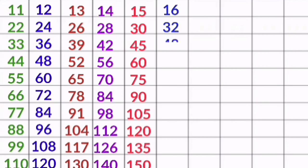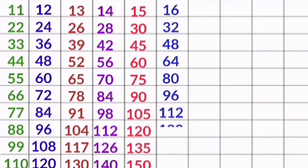16 1s are 16, 16 2s are 32, 16 3s are 48, 16 4s are 64, 16 5s are 80, 16 6s are 96, 16 7s are 112, 16 8s are 128, 16 9s are 144, 16 10s are 160.